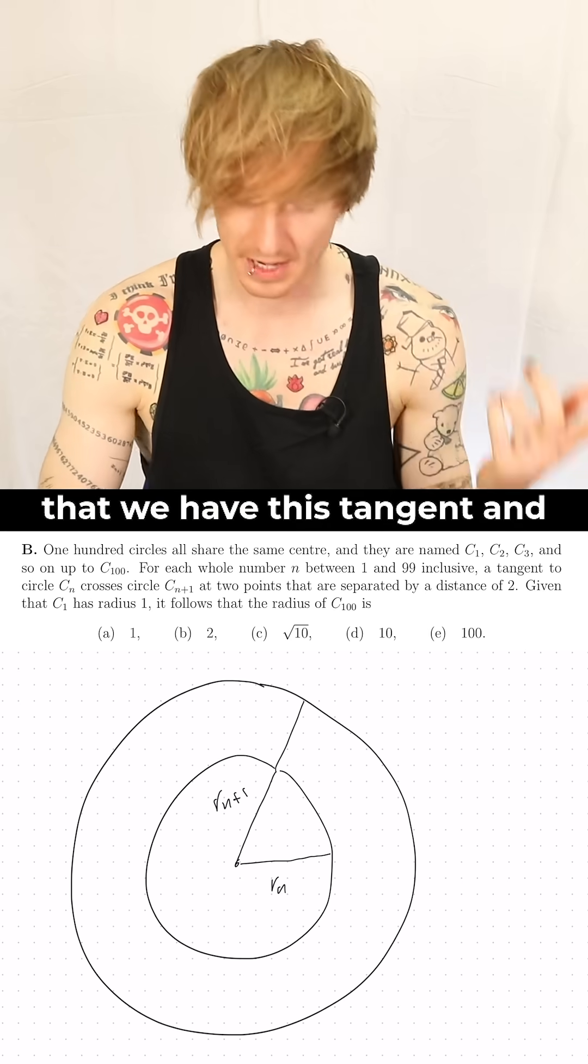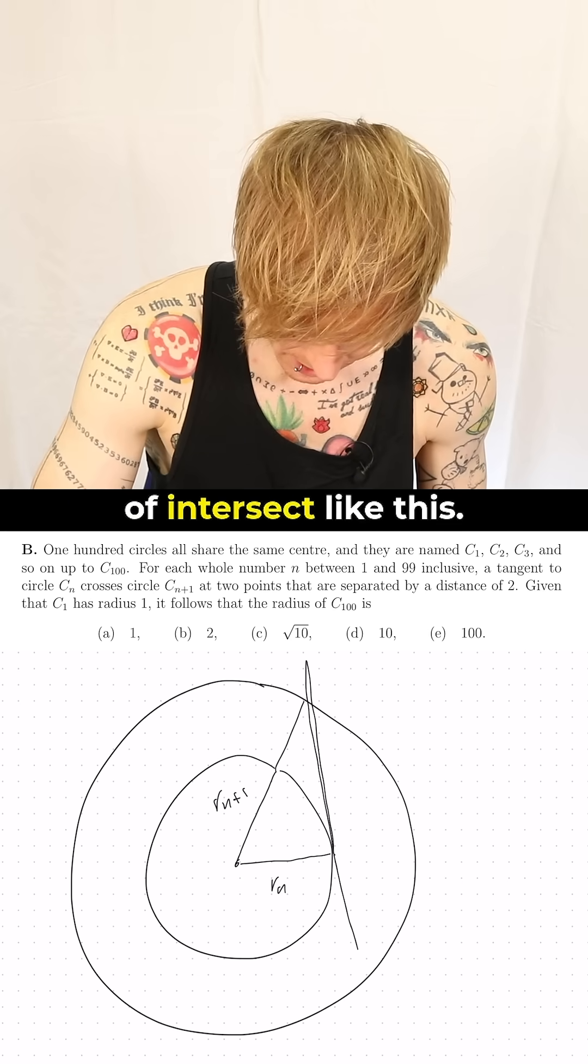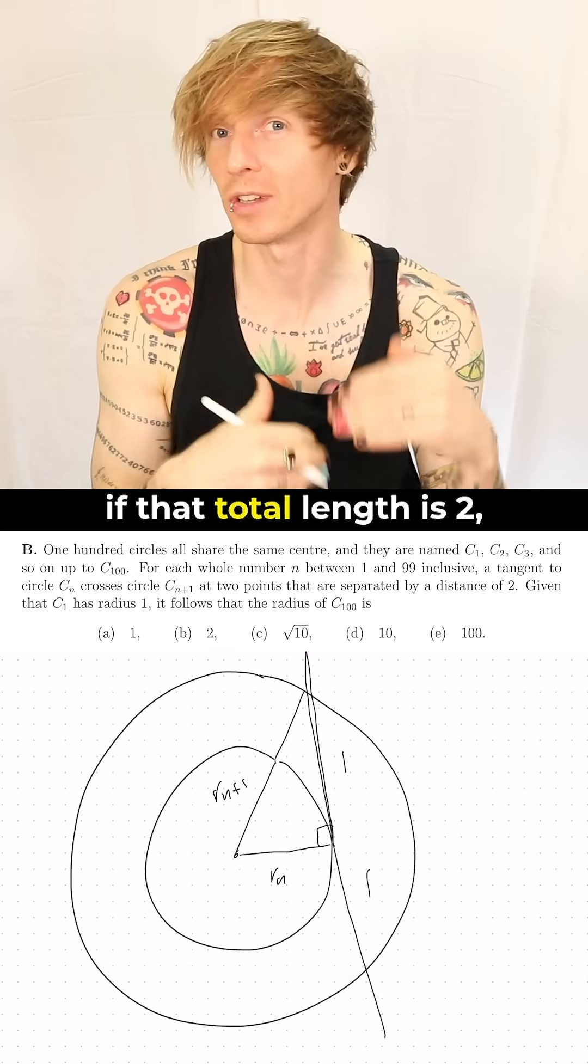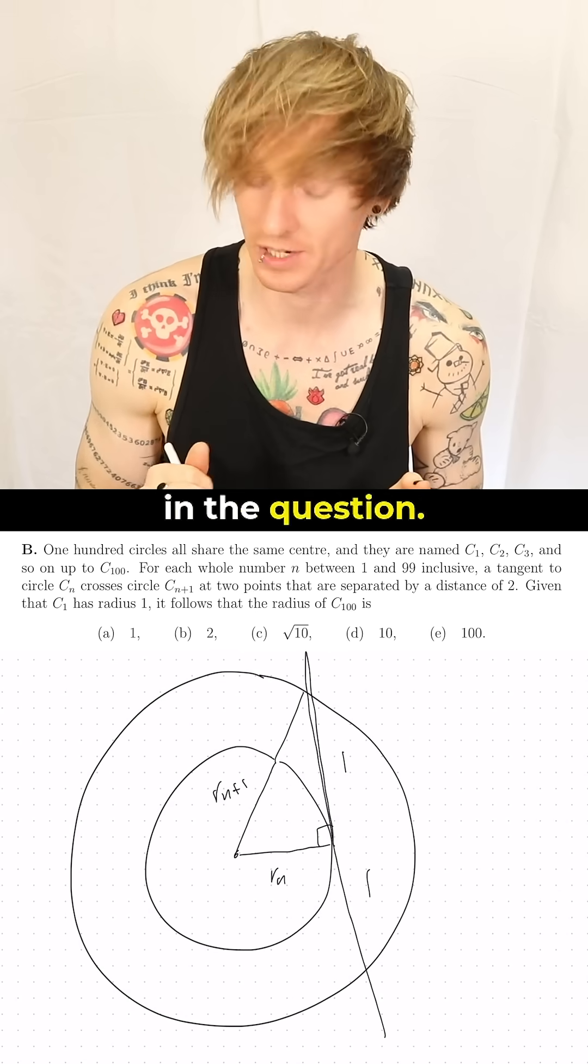Now we know that we have this tangent and I'm going to draw it to intersect like this. We actually know that this is one and this is one if that total length is two, which we're told in the question.